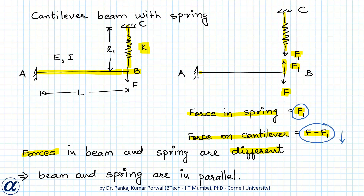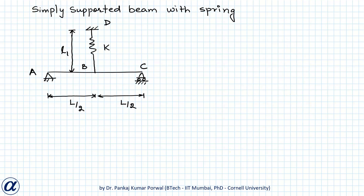The stiffness of the cantilever beam is 3EI over L³. Because the cantilever beam and spring are in parallel, their equivalent stiffness is kc plus k, which equals 3EI over L³ plus k.